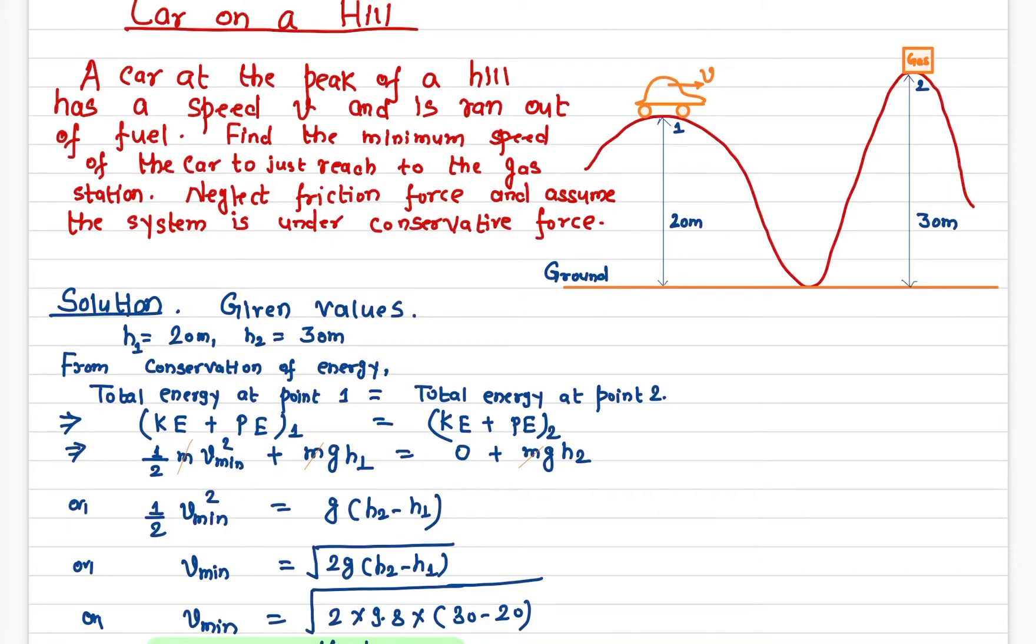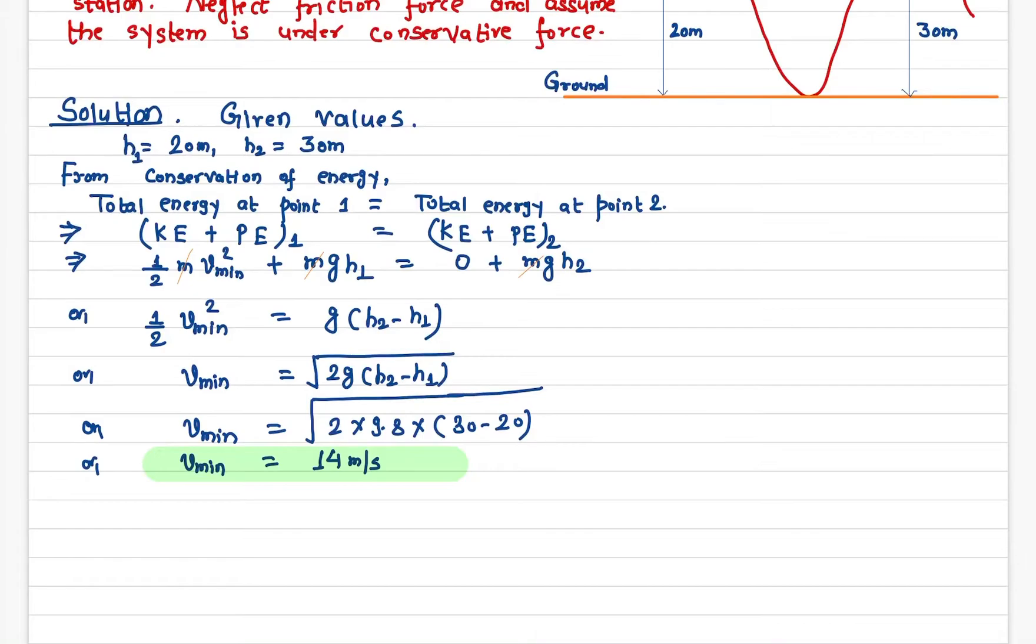The potential energy at this point is mgh₂, which is this height. The mass cancels out, so it is entirely independent of the mass. If we solve for the speed, we get v_min = √(2g(h₂ - h₁)).